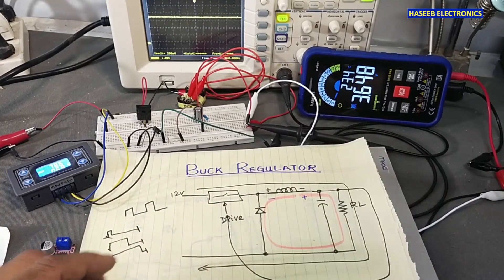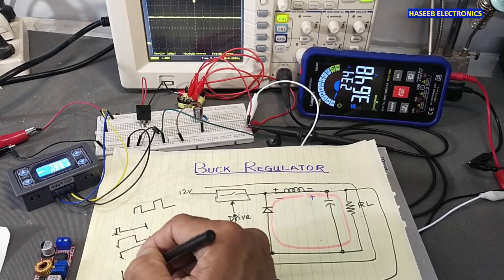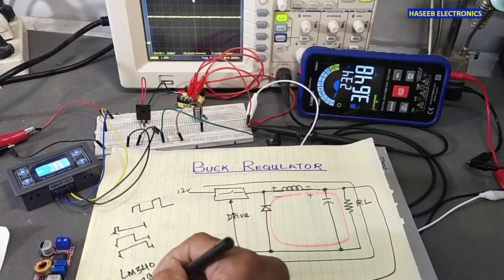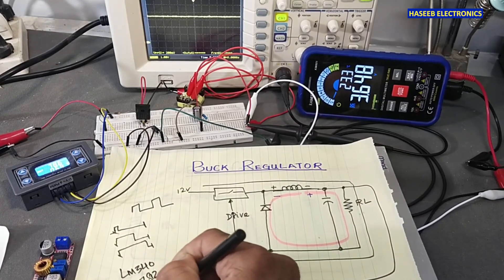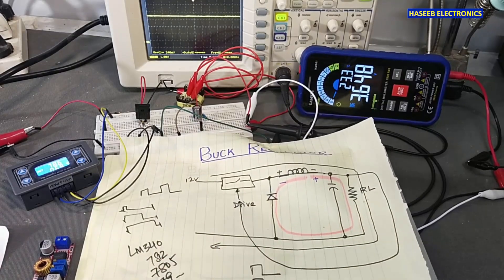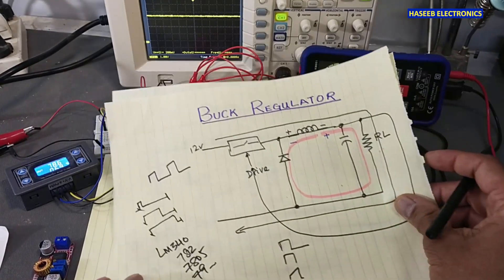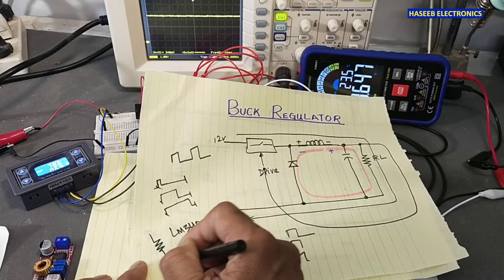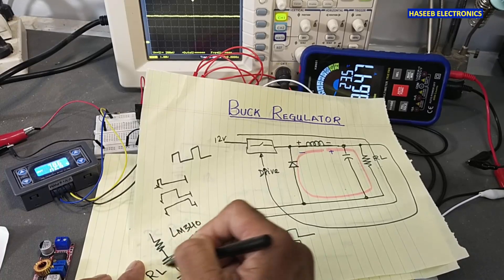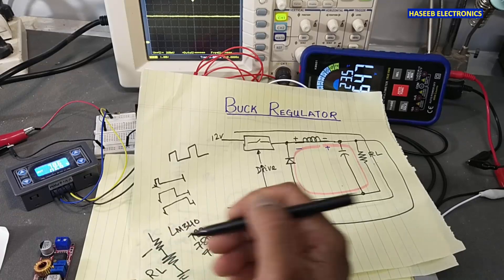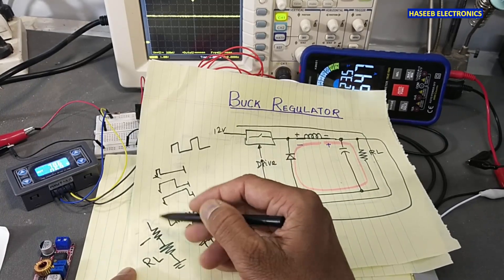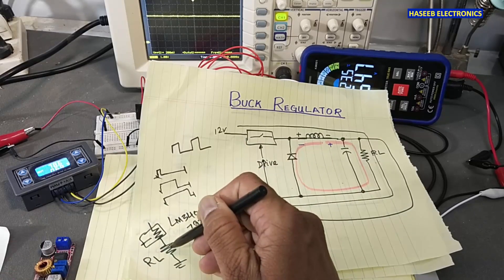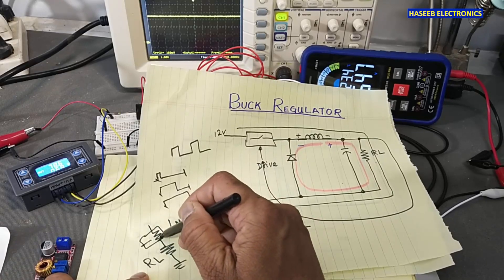If we are using LM340, 7812, 7805, or any linear regulator IC, when we use linear regulator, that regulator comes in series to the load. This linear regulator will change its resistance and come in series to the load.